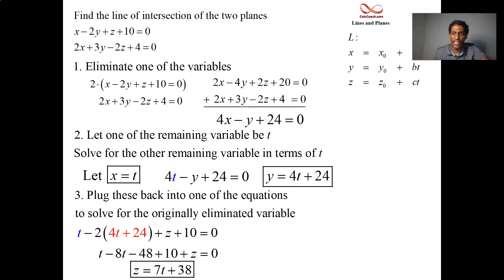But we have exactly the fact that x is t, y is 4t + 24, and z is 7t + 38. Writing it in the form that we have, 0 + t, 24 + 4t, 38 + 7t, so we can read exactly what a point is that's on that line of intersection and what the direction vector is for that line of intersection.